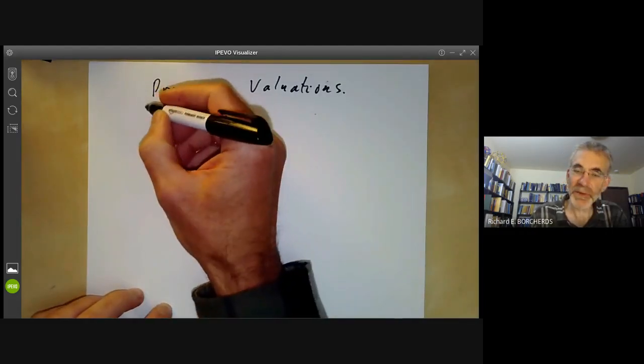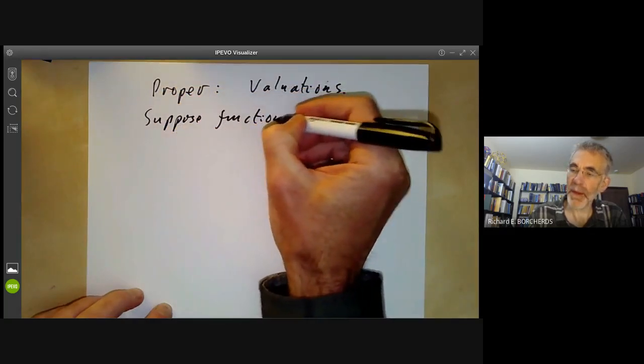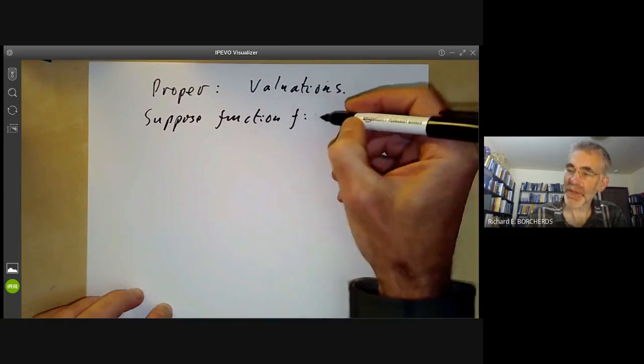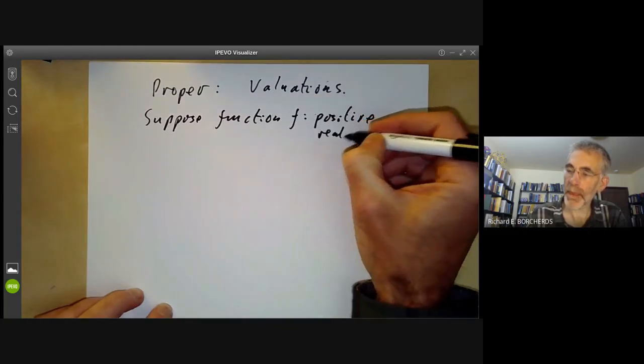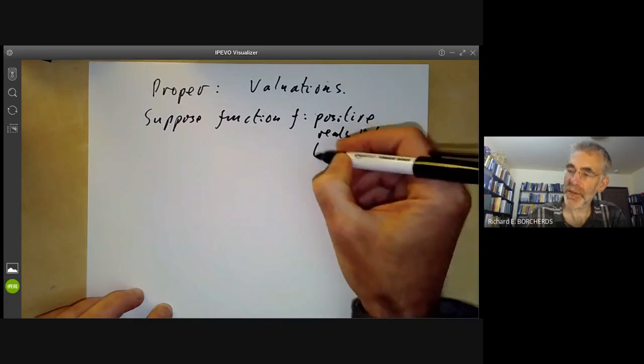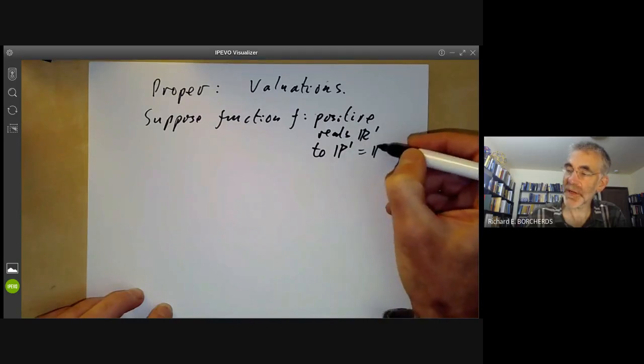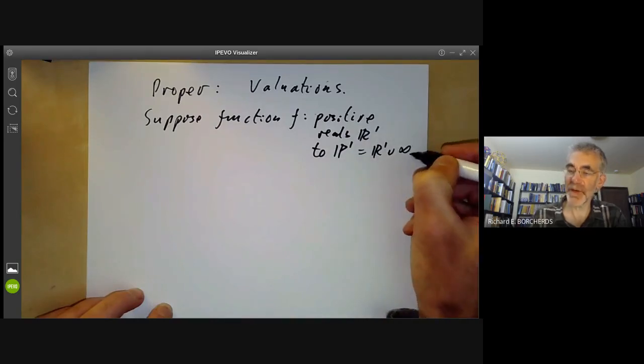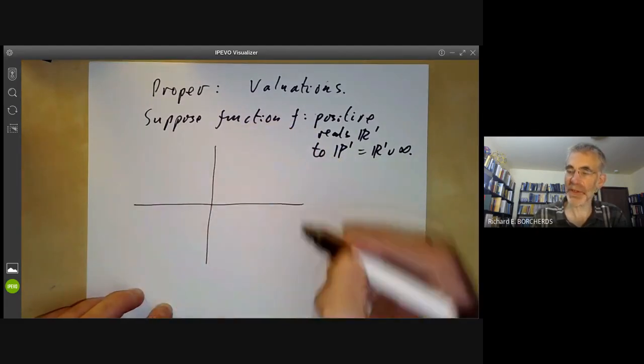Suppose we have a function f from the positive reals to projective space, the projective line over the reals, which is just the reals together with a point at infinity. Let's draw a graph of this function and think what it can look like.